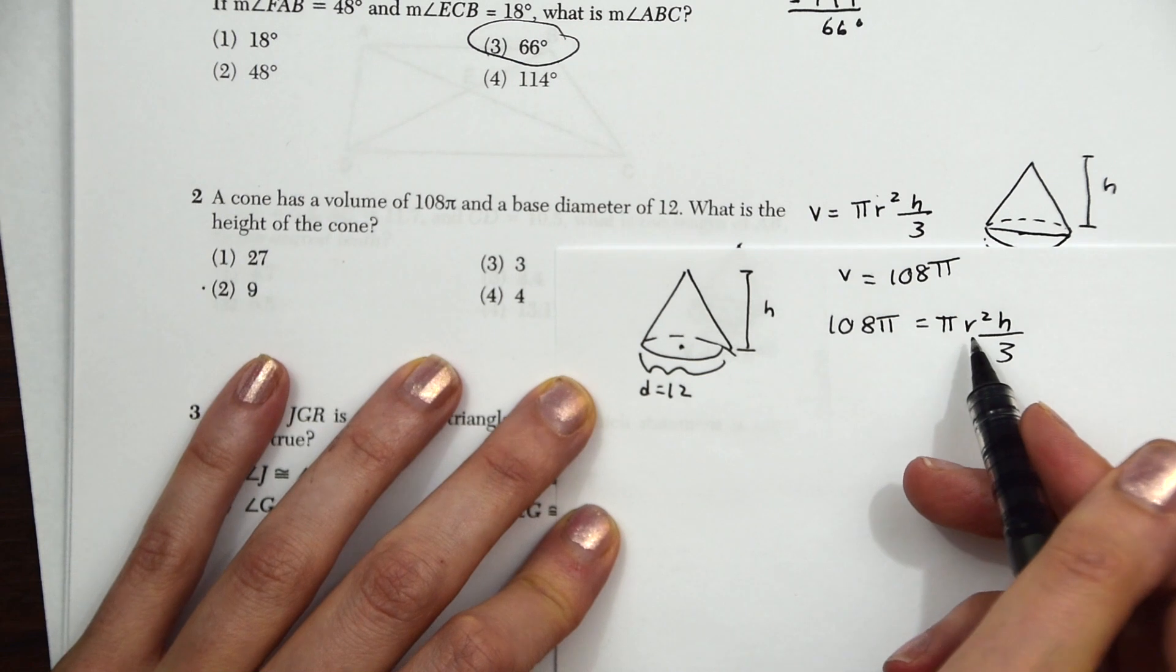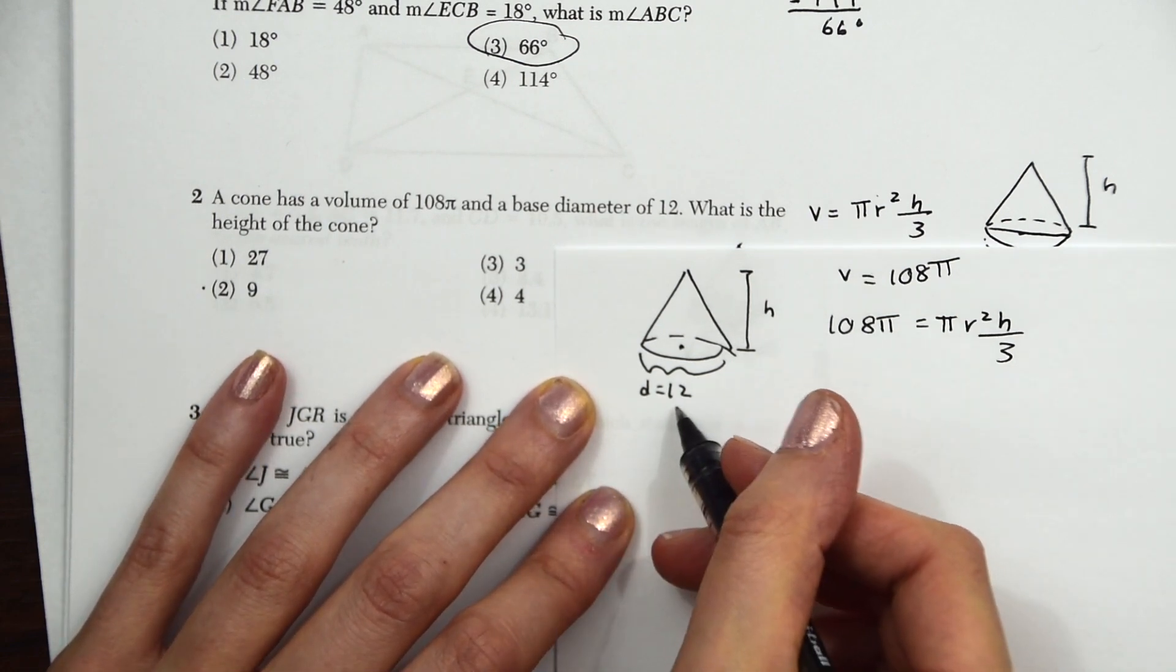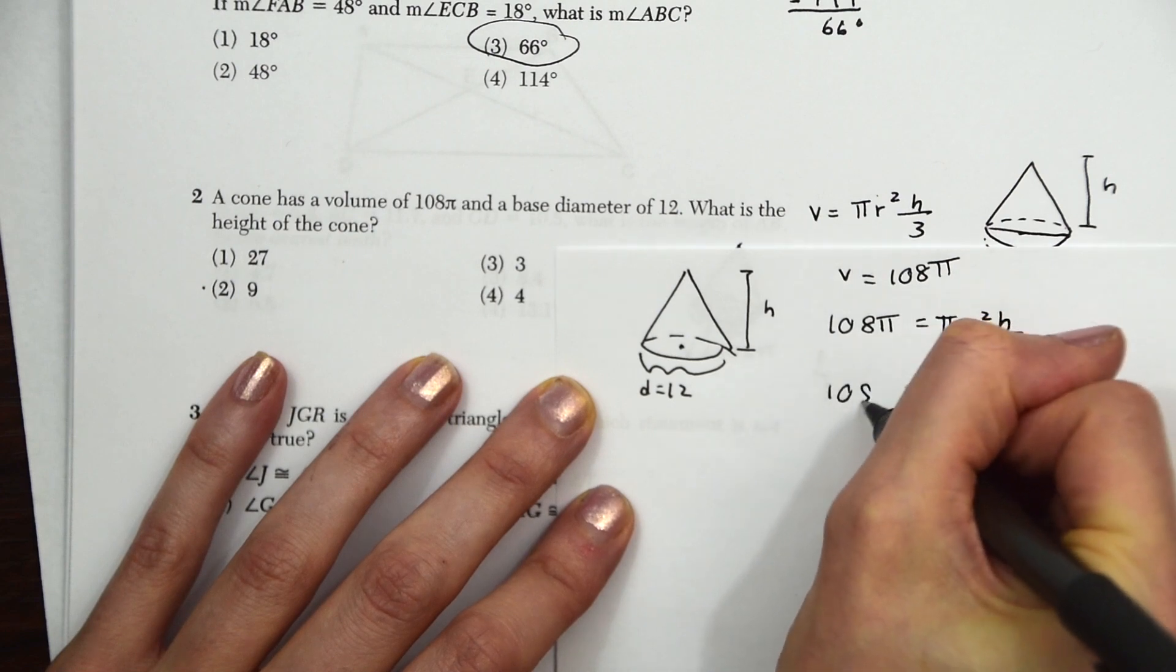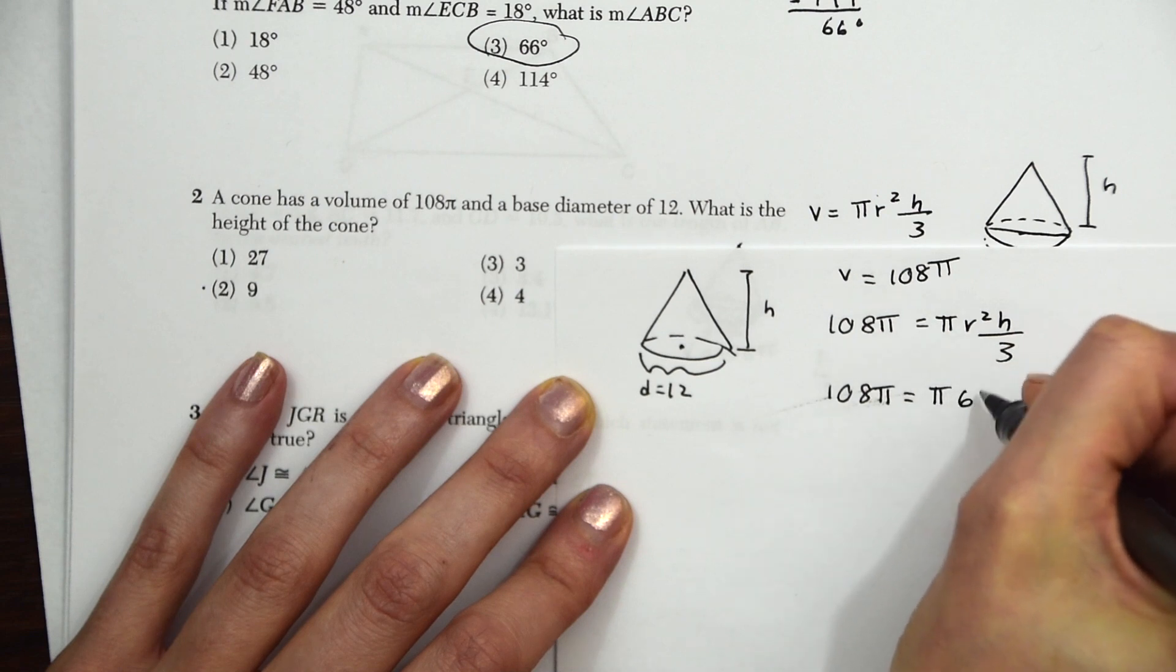Now we just want to fill in this r squared here. So r squared, r is just the radius. We have the diameter. So the radius is just always half of the diameter. So this is going to be 6 squared.